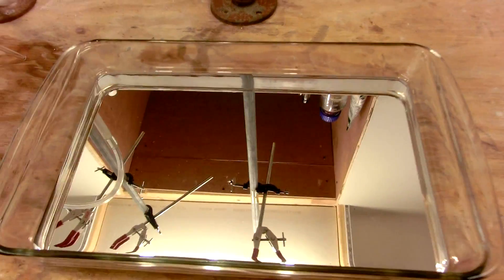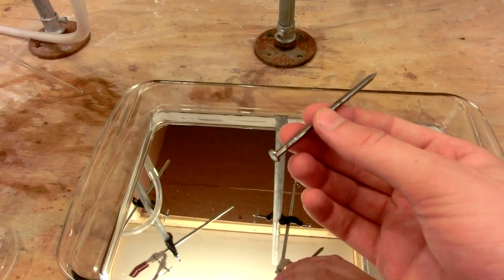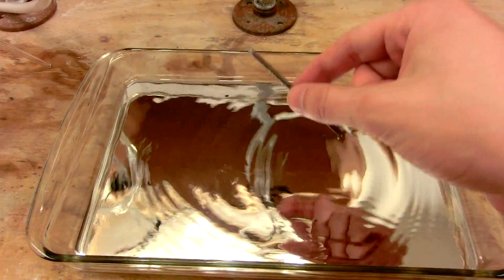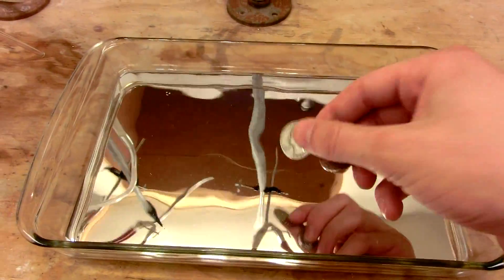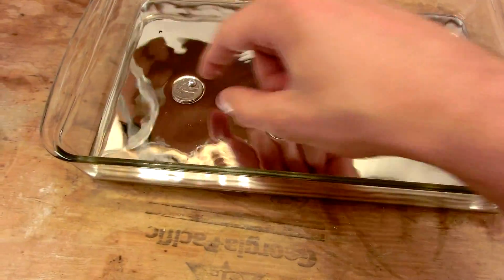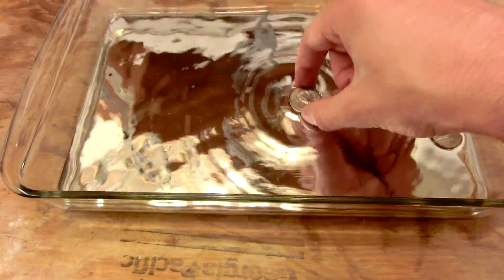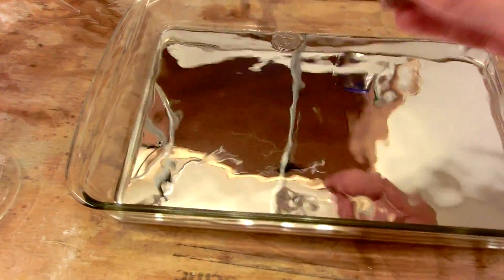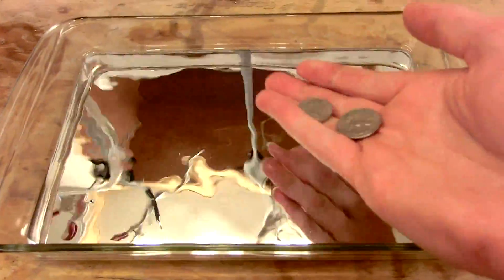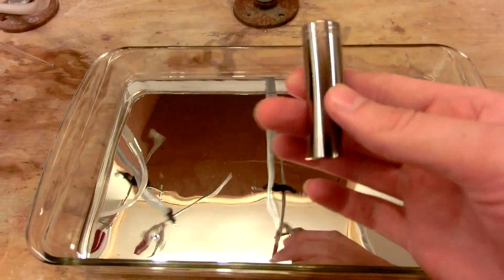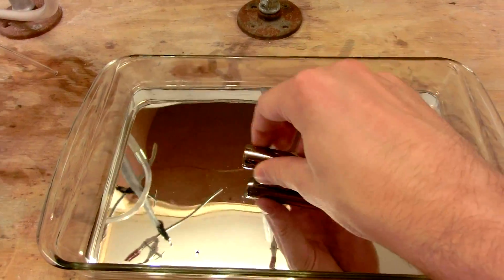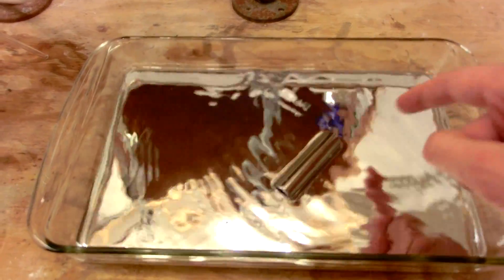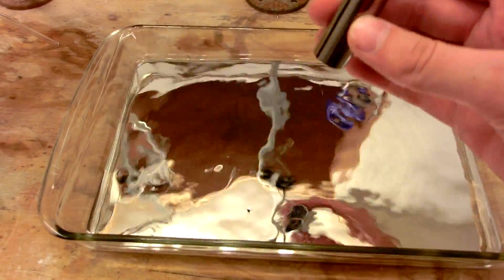But mercury can do some interesting things because of its density, like this is an ordinary steel nail. You'll note it floats pretty easily. How about some spare change? A quarter and a nickel. And look, there's even a little bead that formed on top of this one. Spare change floats on mercury. These will have to be washed before they can get back into circulation. And even a, here's just a 12 millimeter socket. Floats. Touches the bottom a little bit, but it does in fact float in mercury.